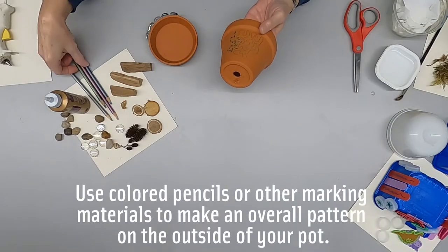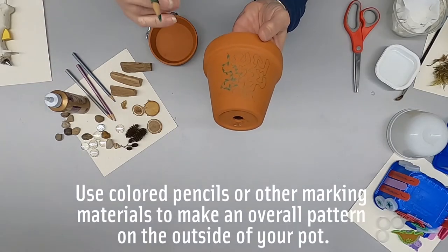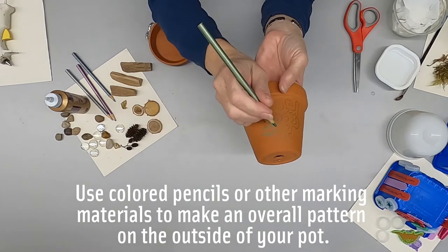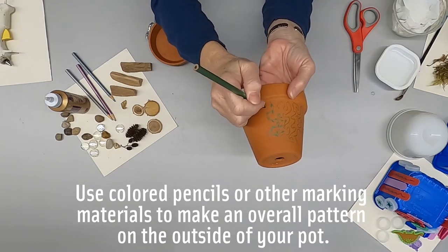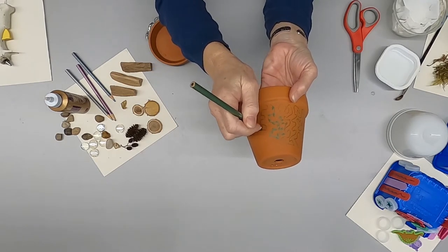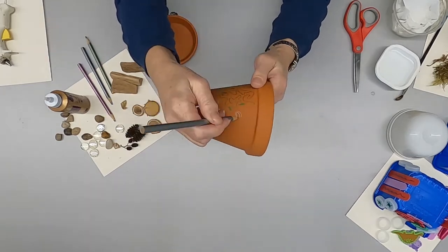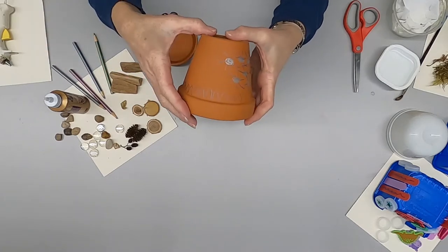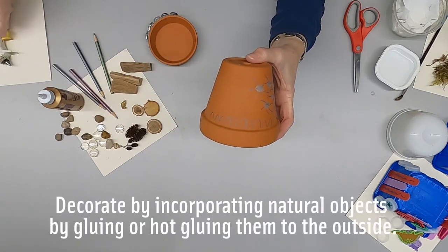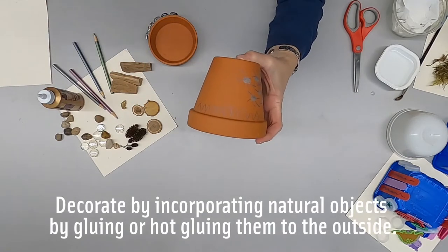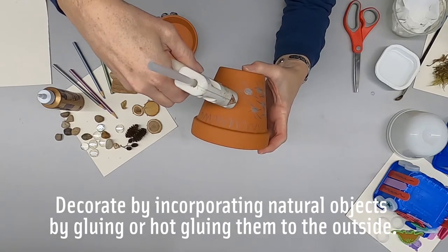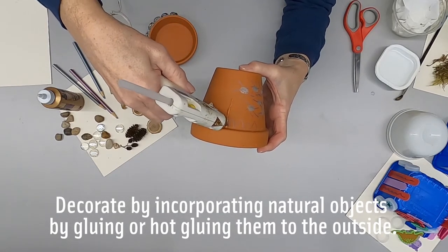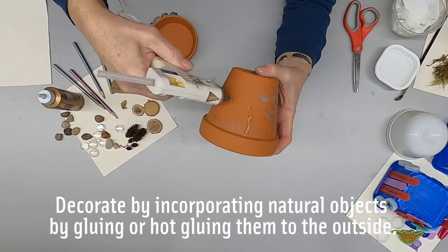Start by decorating your pot with your pencil or other drawing material. Any shape, any pattern, it's up to you. Once you've got it how you like it, it's time to add some of those other decorations. Use the hot glue or the tacky glue and attach some of your other materials.